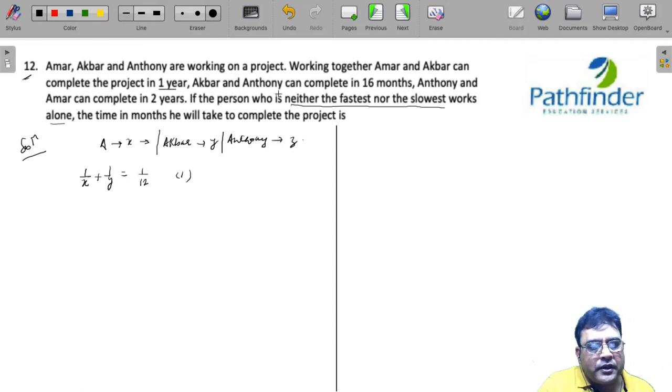Next, Akbar and Anthony can complete in 16 months. So I can write 1 by Y, rate of Akbar plus rate of Anthony 1 by Z must be equal to combined rate. That is 1 by 16. So this is my equation 2. And similarly, I can write Anthony and Amar. The rate of Anthony plus rate of Amar is equal to 1 by 24. Two years is 24 months. This is my third equation.